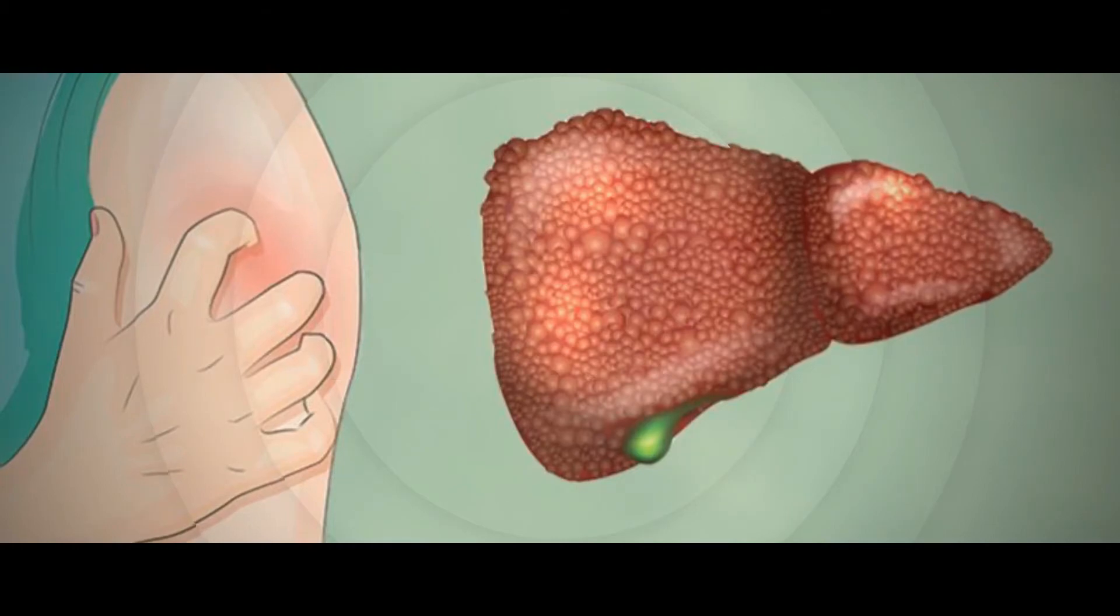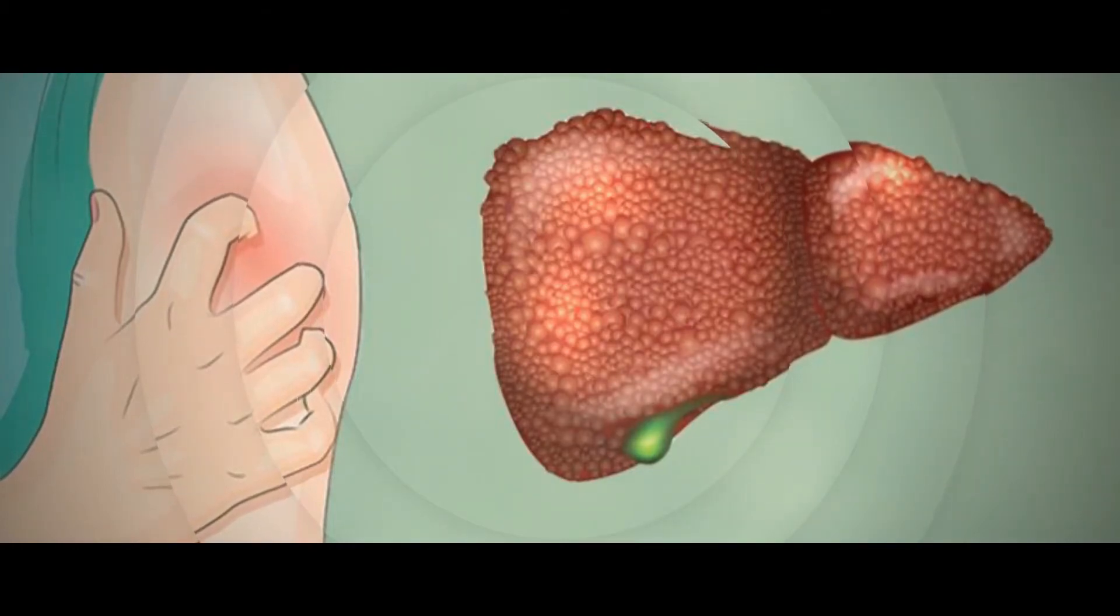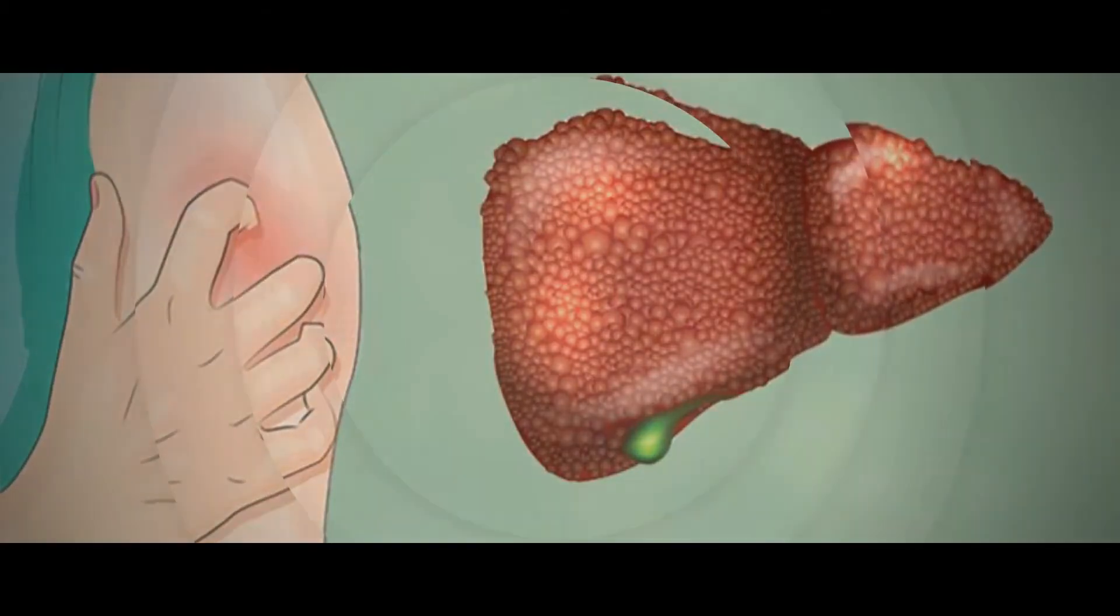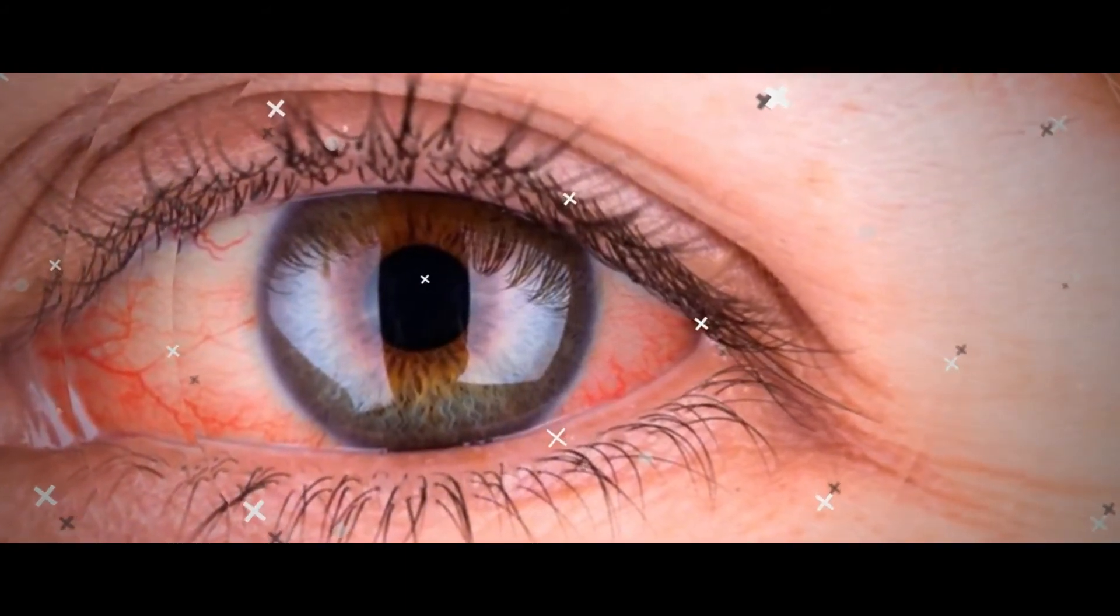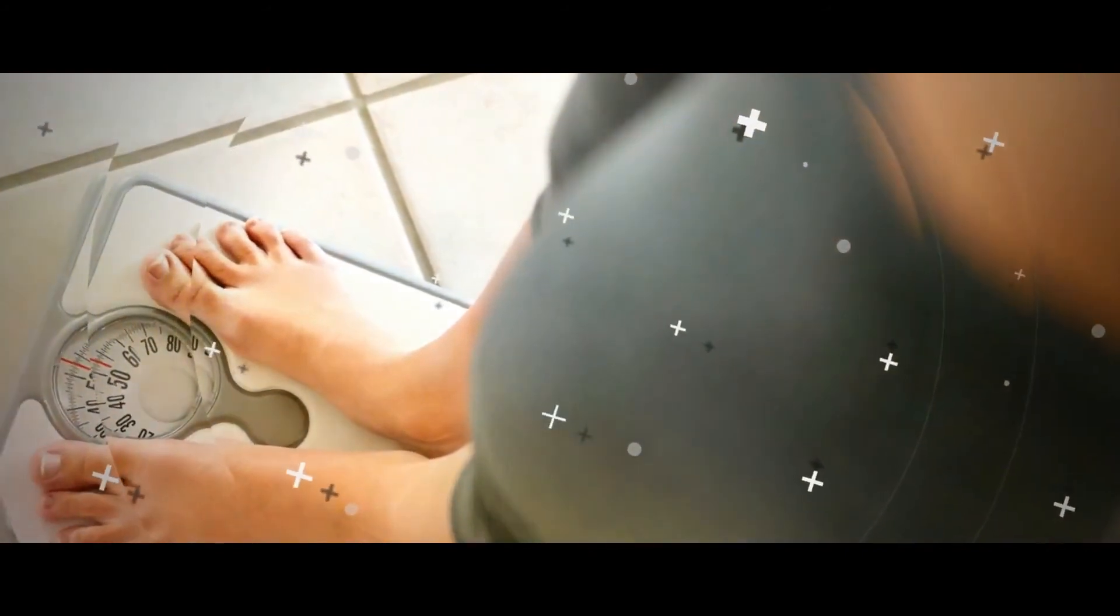Once a person progresses beyond those early symptoms, the damage to the liver and the side effects become more serious, the American Liver Foundation explains. People may have the blood vessels leading to their livers burst, toxins could build up in their brains and interfere with mental function, and they could experience nausea and diarrhea.